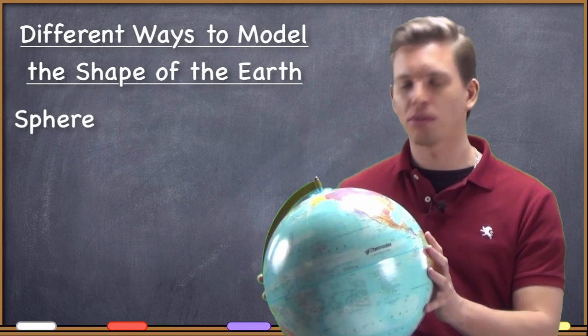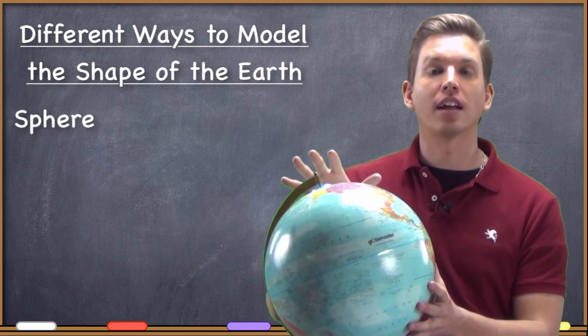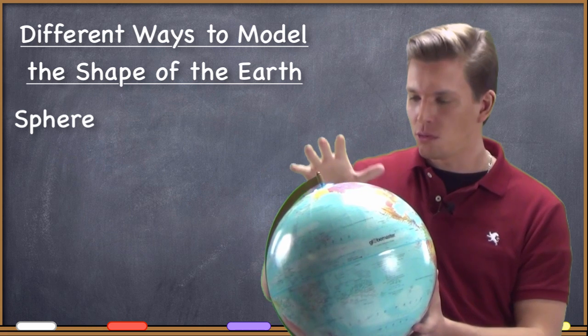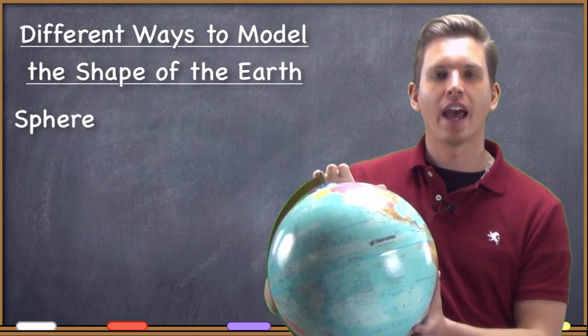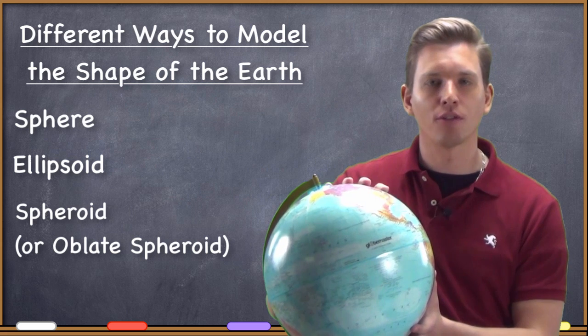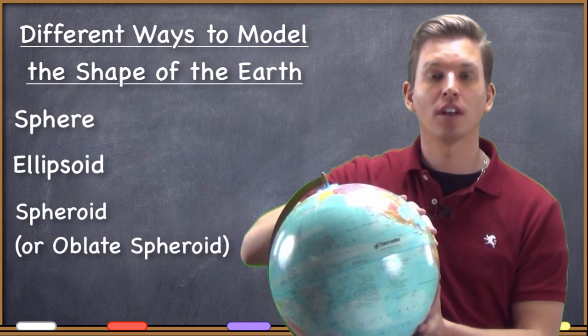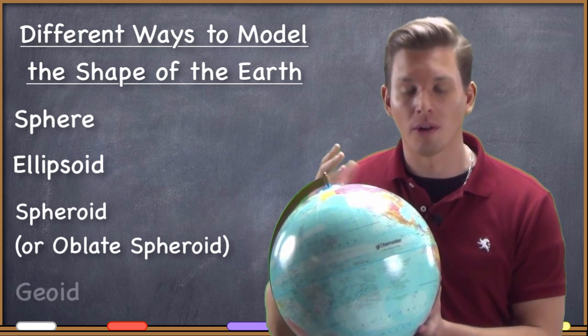So a geoid accounts for the lumpiness of the Earth as well as the squashedness of the Earth. A sphere is a representation of the Earth at one level of generalization. If we want to get a little bit better than that, we squash the sphere a little bit and we get to an ellipsoid. And then if we want to make an even better representation of the Earth, we take into account its lumpiness and produce a geoid.